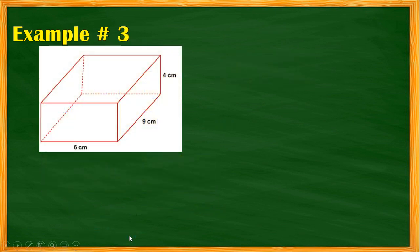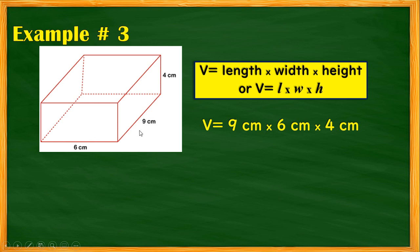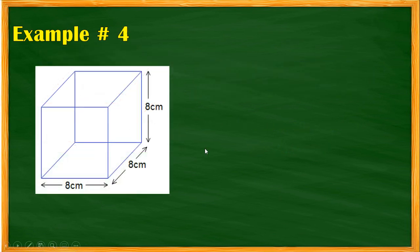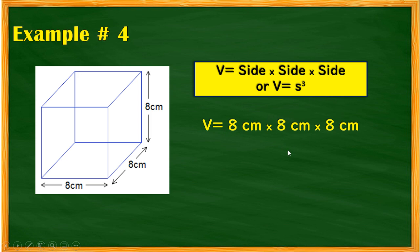For Example 3: a rectangular prism illustrated with length 9, width 6, and height 4. Using the formula V = length × width × height: 9 × 6 × 4 = 216 cubic centimeters. For Example 4: a cube with side 8. Using V = s³: 8 × 8 × 8 = 512 cubic centimeters.